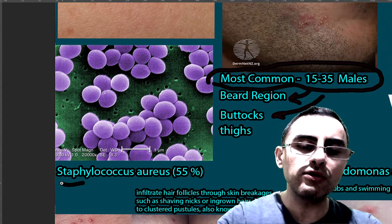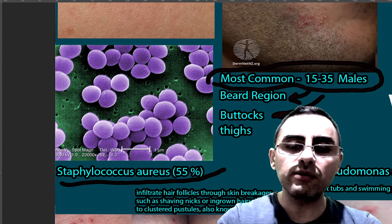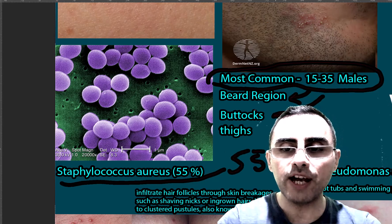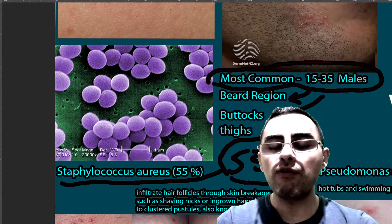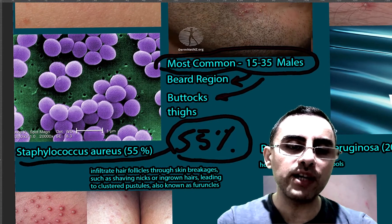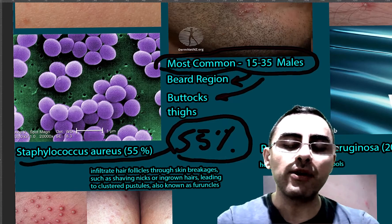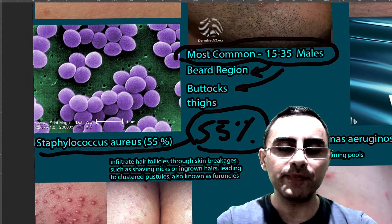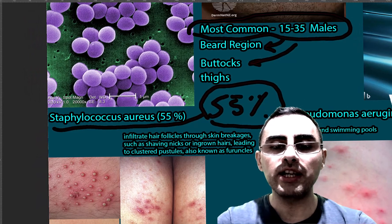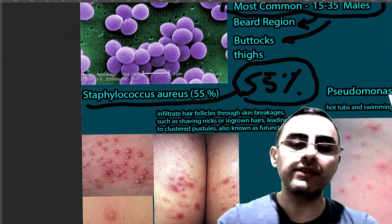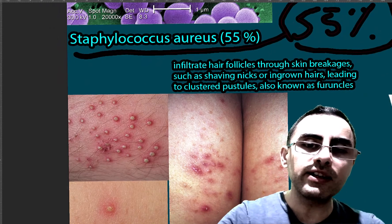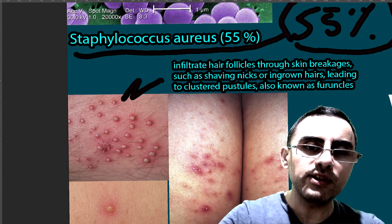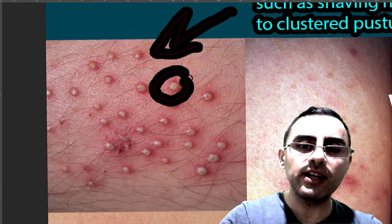The most common pathogen causing folliculitis is Staphylococcus aureus, which causes folliculitis in 55% of cases — so more than half of all cases are caused by Staphylococcus aureus, a resident of our normal skin flora. Staphylococcal infection is characterized by clusters of pustules, which you can see — these clusters are very characteristic.